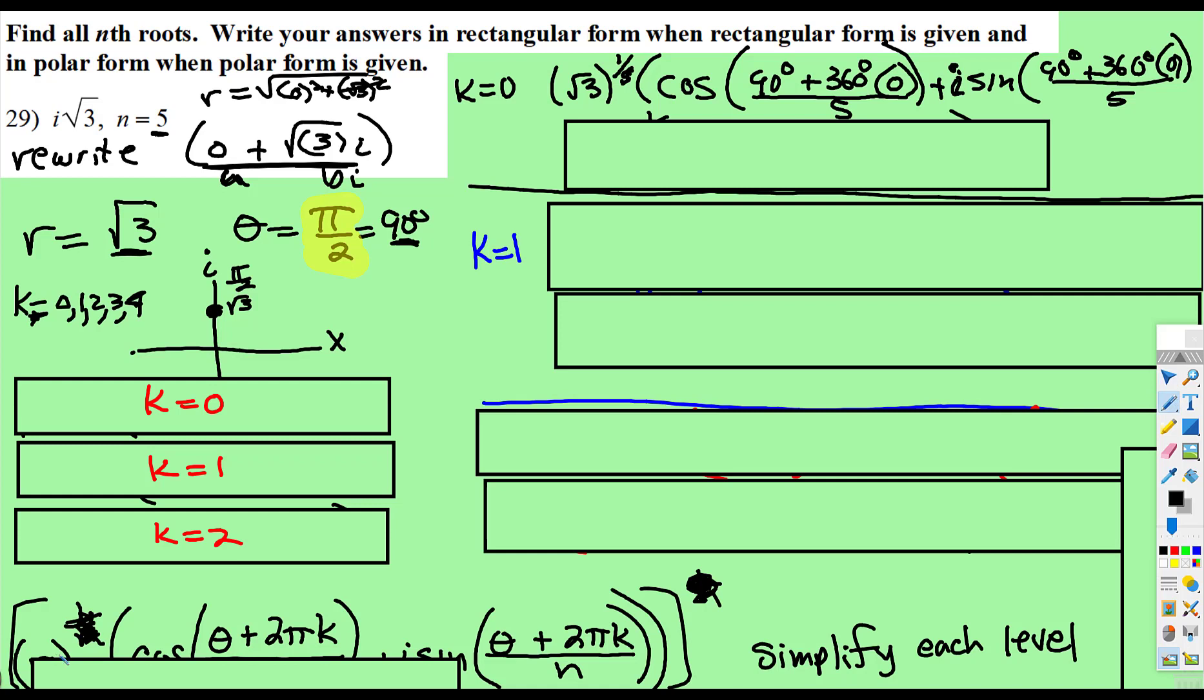So remember, it's r to the fifth root. So ⁵√3 to the 1 over 5 times cosine. We have θ plus 2πk all over n. Remember, our n is 5, and our k, so we'll start with 0. So 90 degrees, instead of 2π, we're using degrees, so 360 times k, and all of that is over 5.